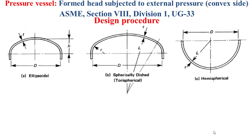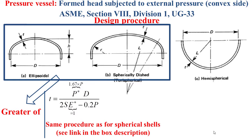For the ellipsoidal and the tori-spherical formed heads, the thickness should be the greater of the thickness obtained by the formula that we see now in this slide. Here, P* equals 1.67 times P, where P refers to the applied external pressure and P* is the design pressure. E* is equal to 1 as joint efficiency.